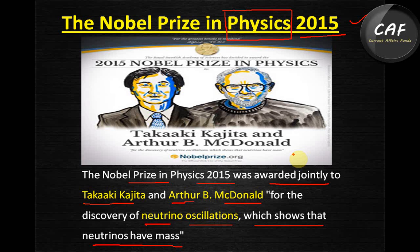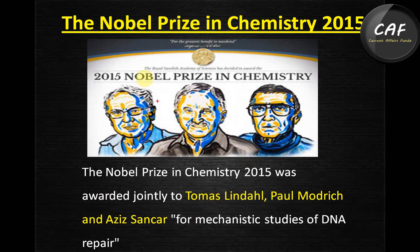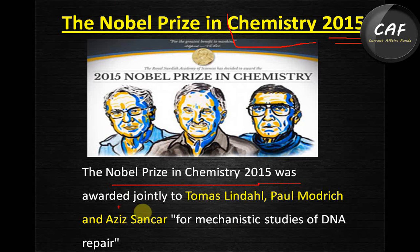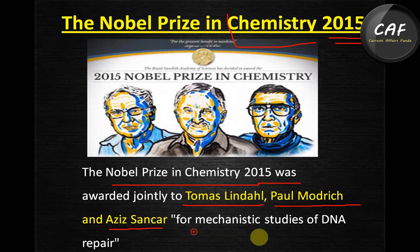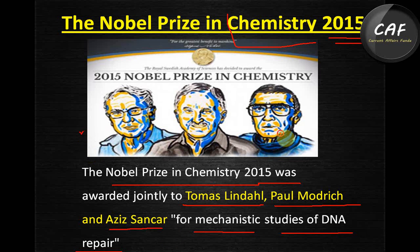Moving to the Nobel Prize in Chemistry 2015 — three scientists won this prize. It was awarded jointly to Thomas Lindahl, Paul Modrich, and Aziz Sancar for their mechanistic studies of DNA repair. This is a very important discovery name — DNA repair — and you have to remember these three names for the chemistry section.